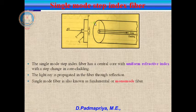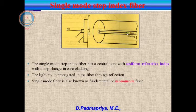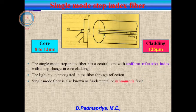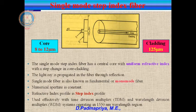Single mode step index fiber: it always takes a single path through the fiber axis and has a step index profile. The core diameter is very small since it allows only one ray to pass through, and the core has a uniform refractive index with a step change at the core-cladding interface. Light is propagated inside the core through reflection. It is also called monomode fiber. The core diameter ranges from 8 to 12 micrometers and the cladding diameter is 125 micrometers. Numerical aperture becomes constant in this type. It is used in time division multiplex and wavelength division multiplex systems operating in the 1550 nanometer wavelength region.